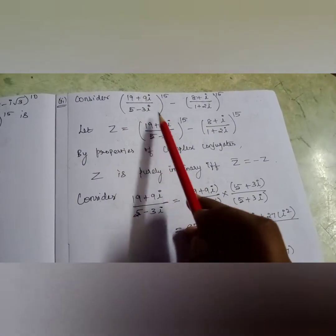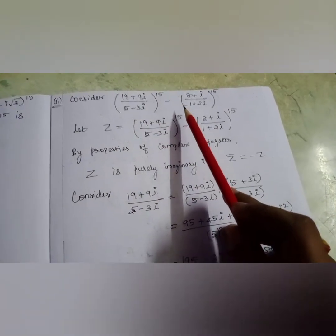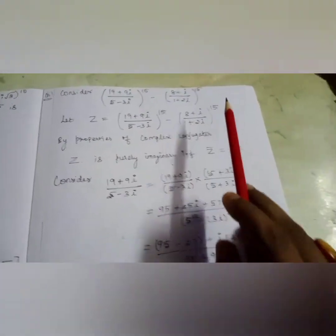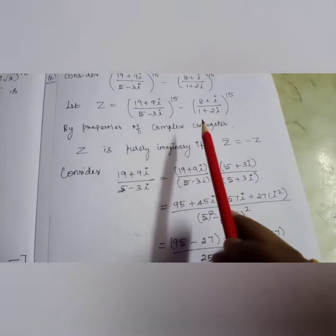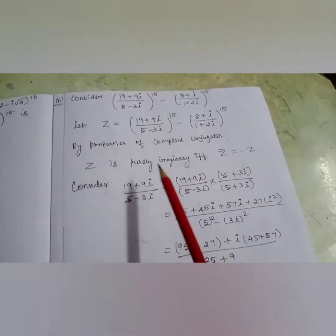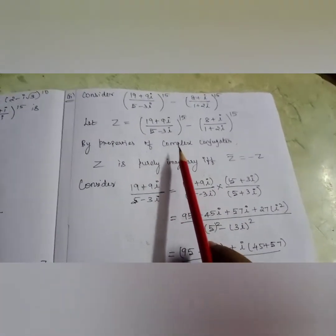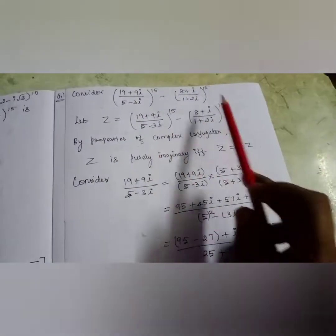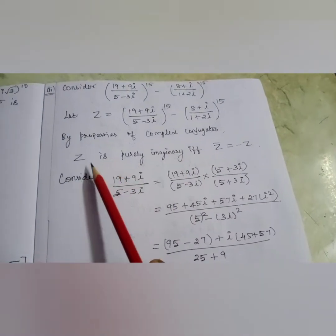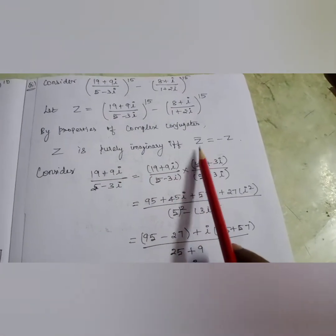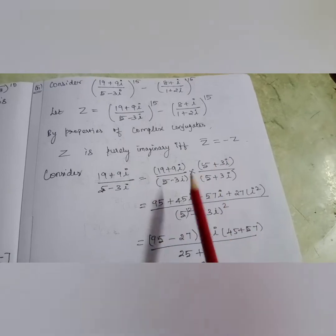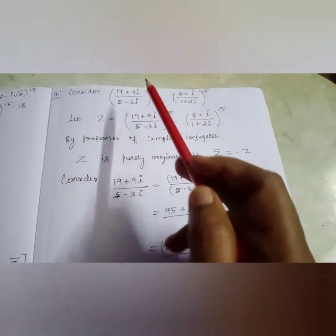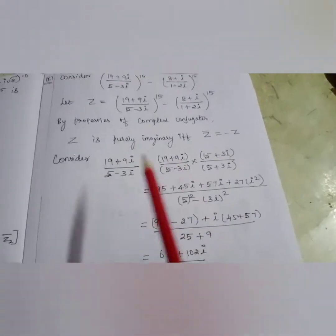Now consider the second part: [(19 + 9i)/(5 − 3i)]^15 − [(8 + i)/(1 + 2i)]^15. Let z equal the given expression. This sum is a little different compared to the previous one. The property we use here is: z is purely imaginary if and only if z̄ = −z. That is, when I convert the expression to z̄, I should get z with a minus sign outside.